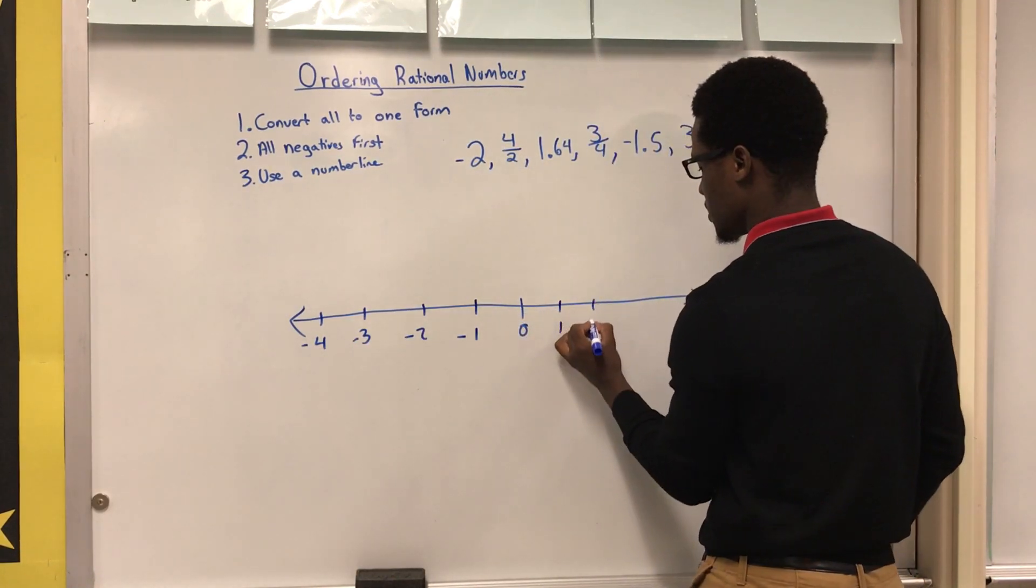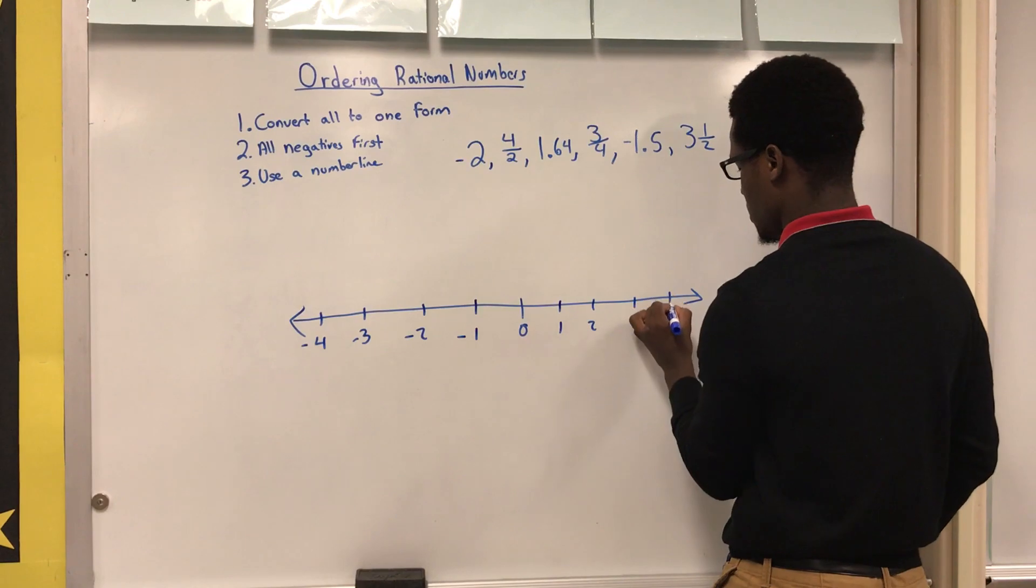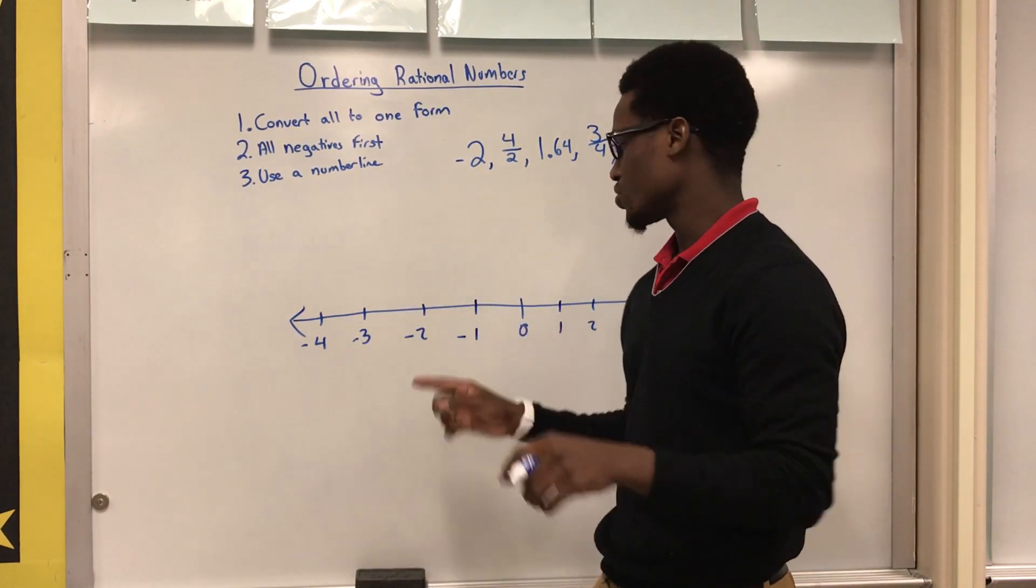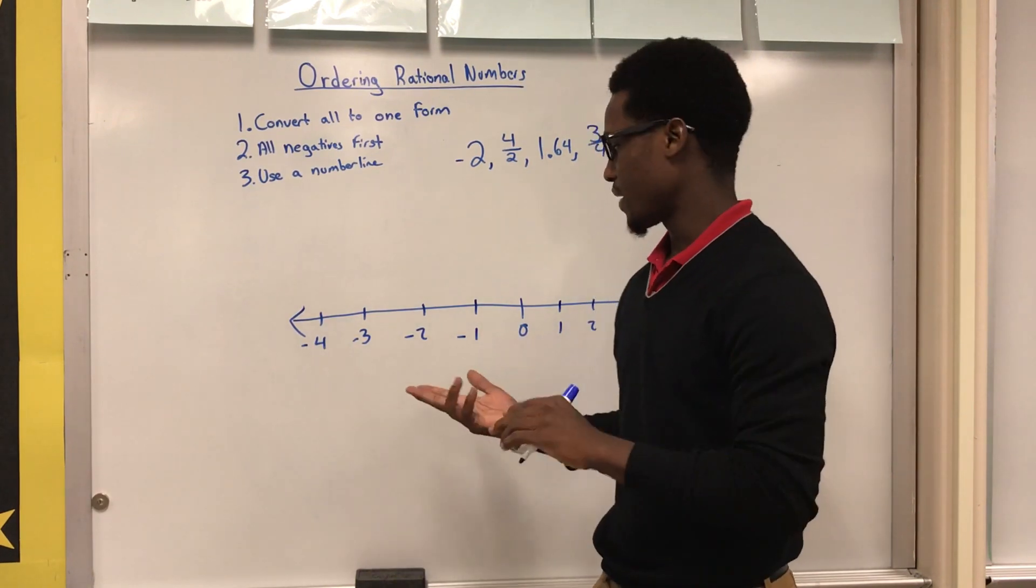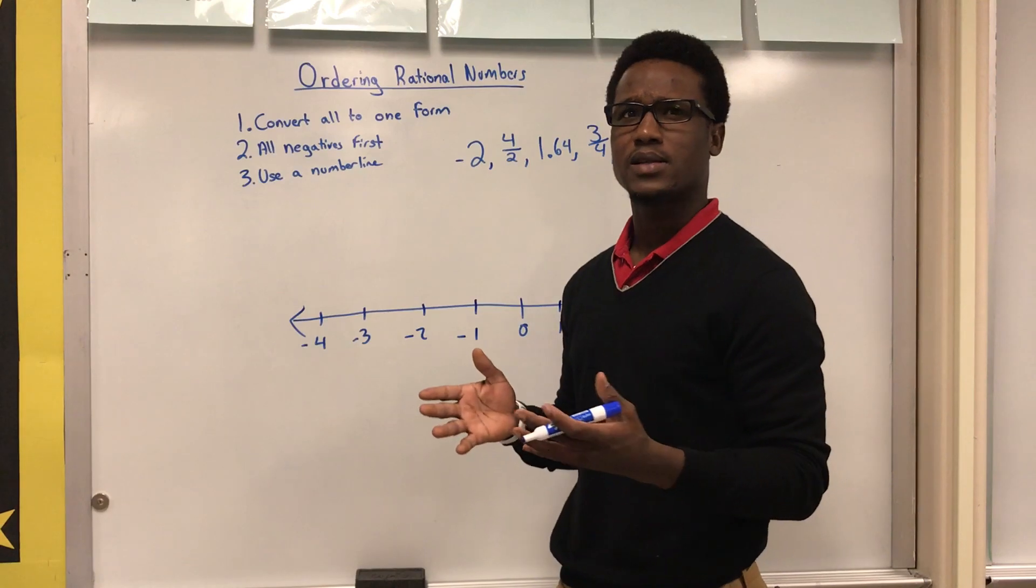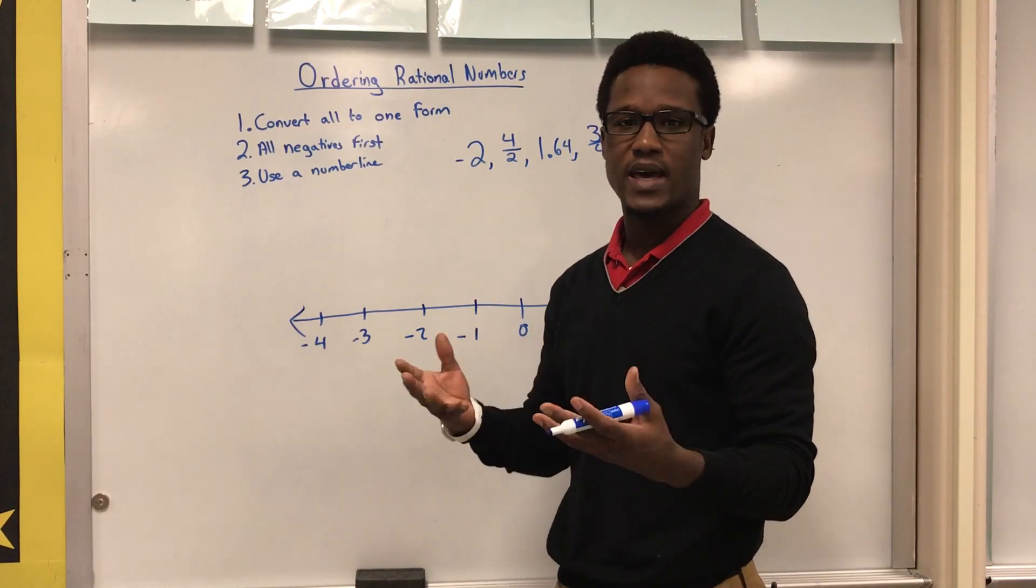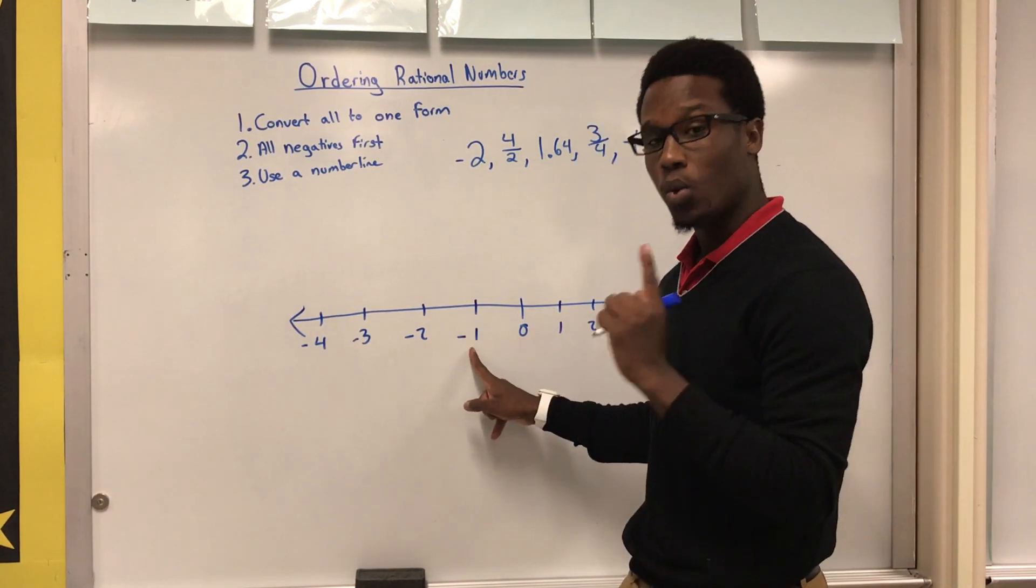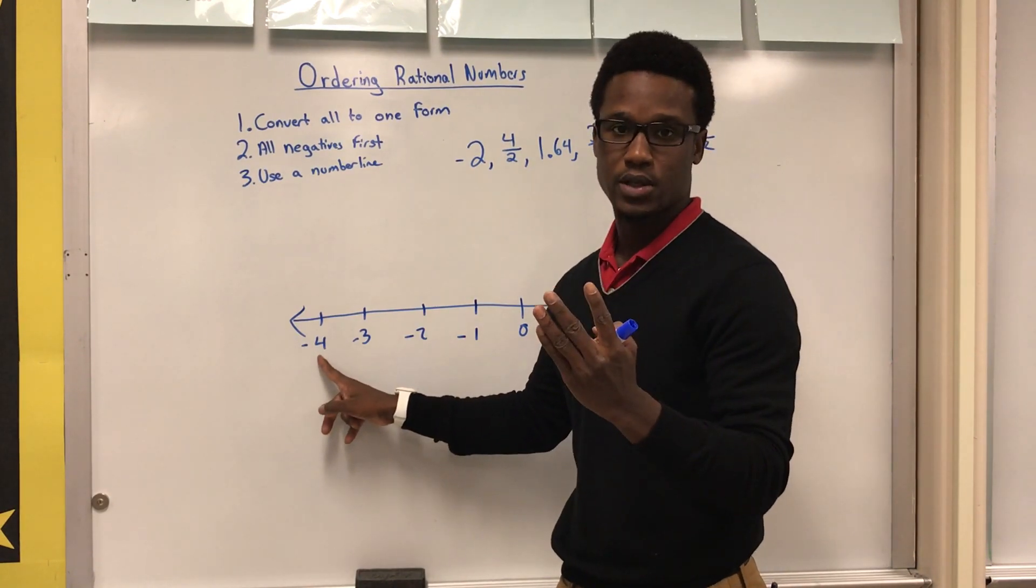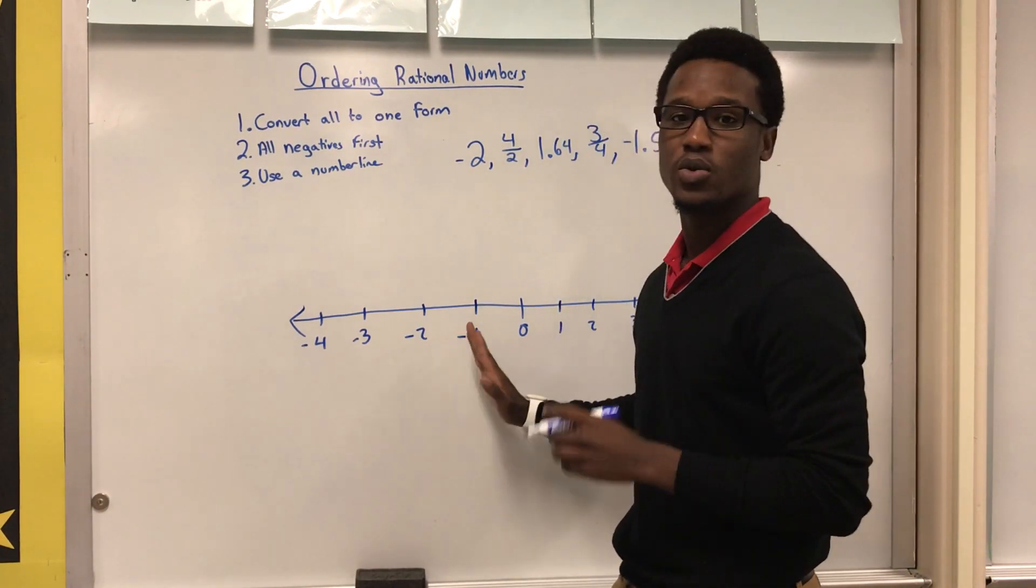Now keep in mind with negatives the rules are reversed, so the bigger the negative, the smaller it actually is. Think about negatives in terms of debt. Would you rather owe somebody $1 or $4? Me personally, I would rather owe someone $1, so this is going to be more on the positive side.